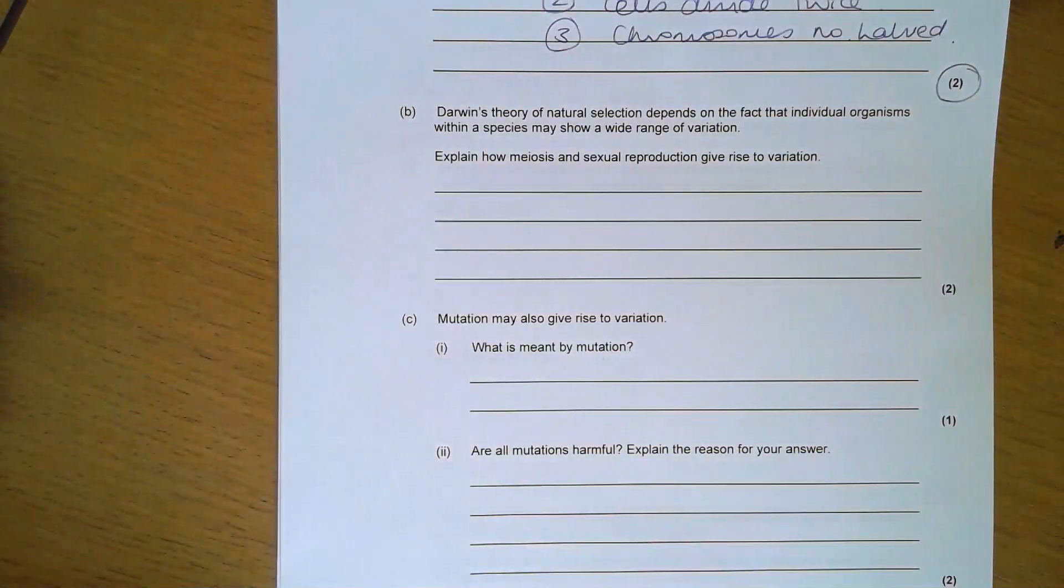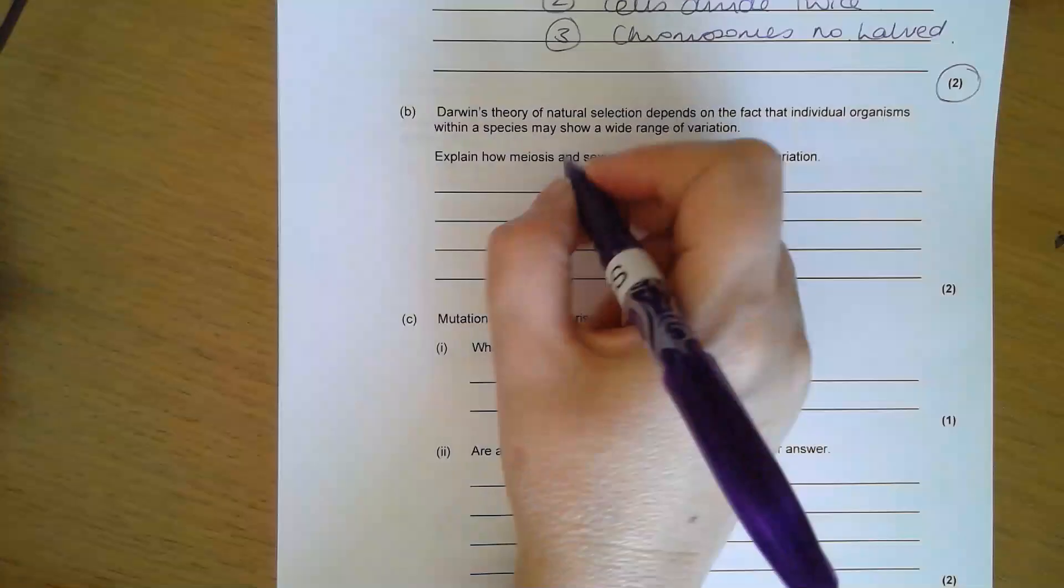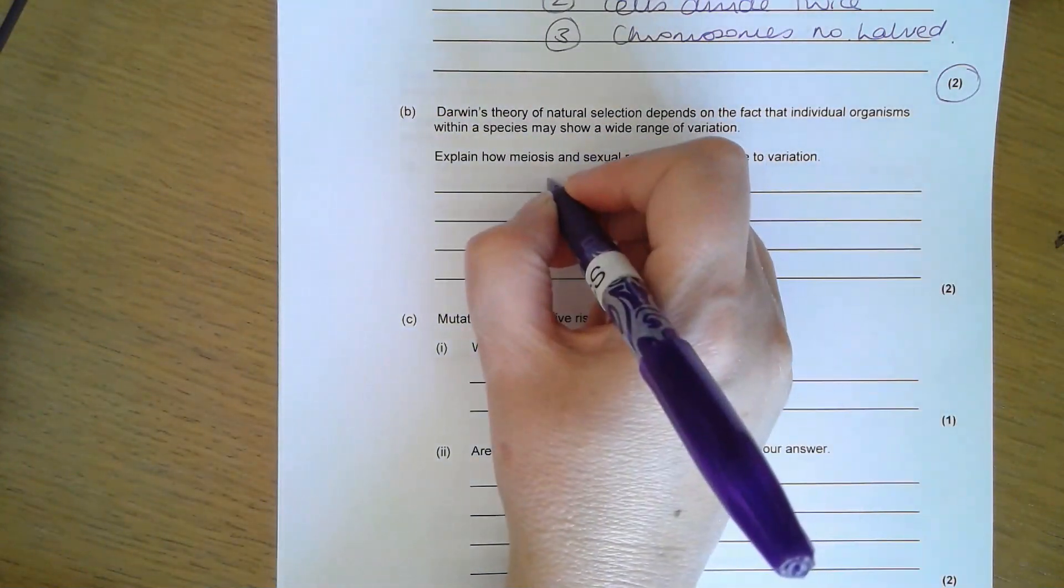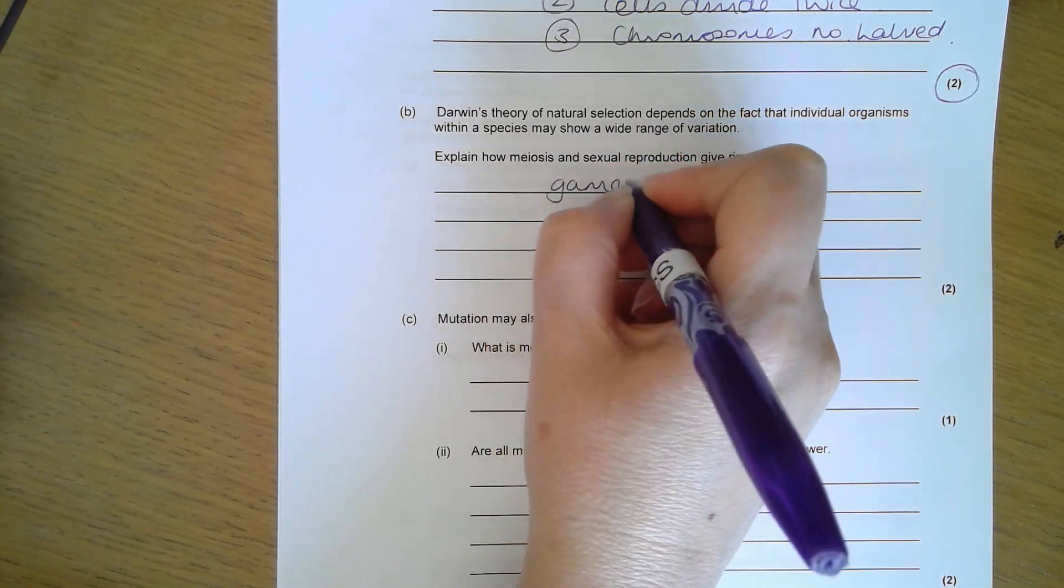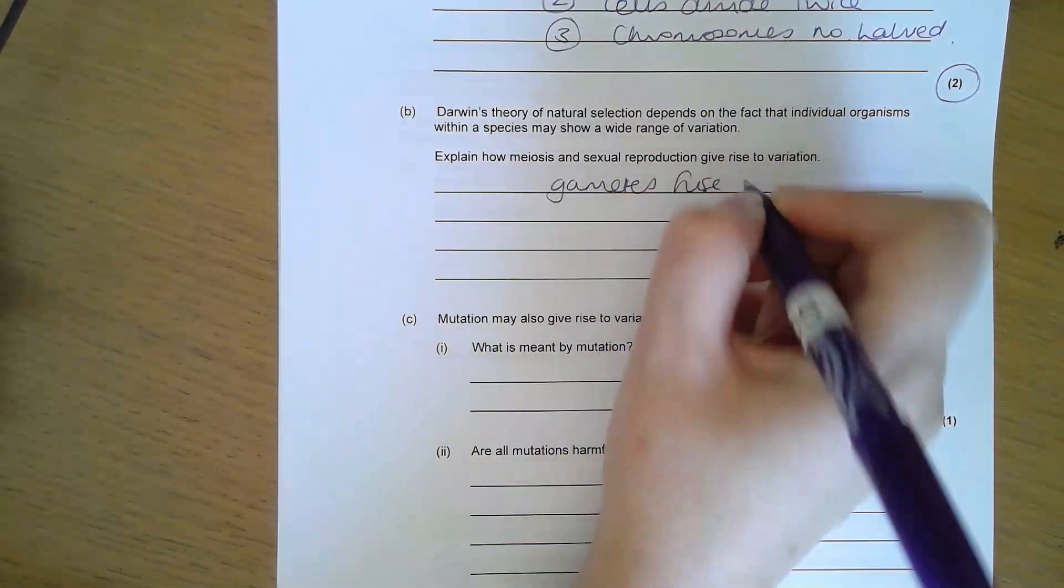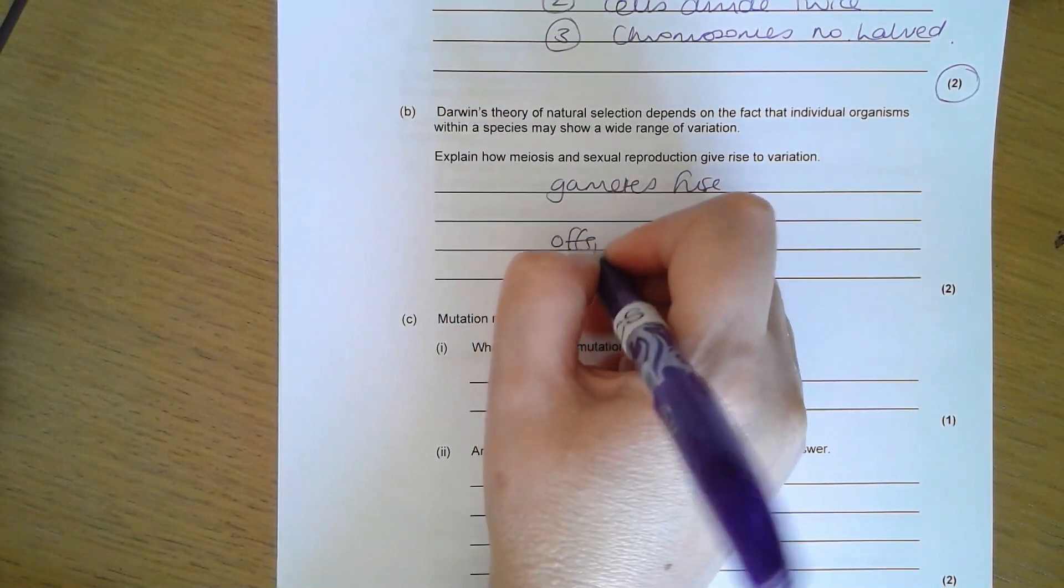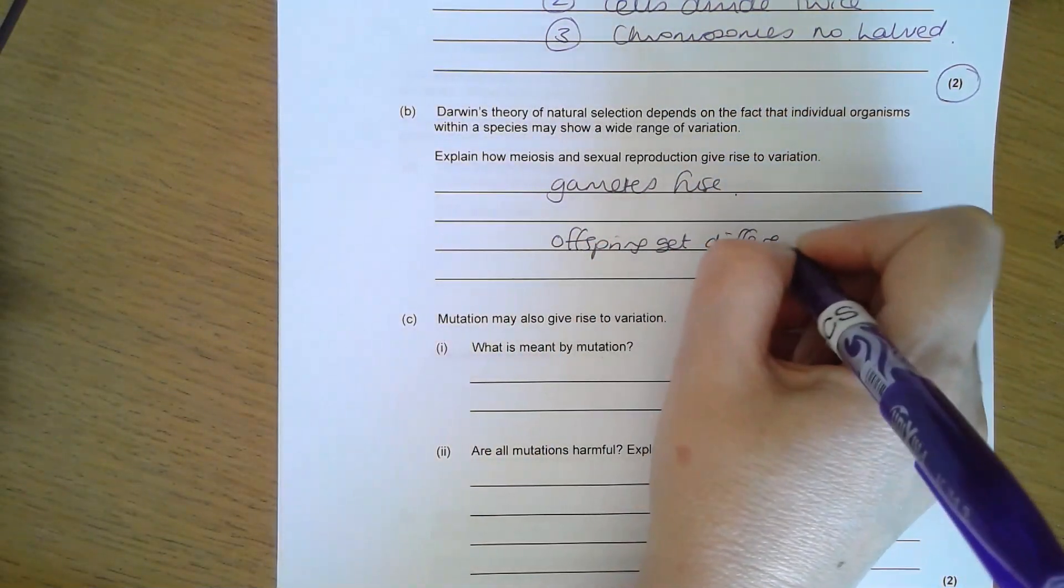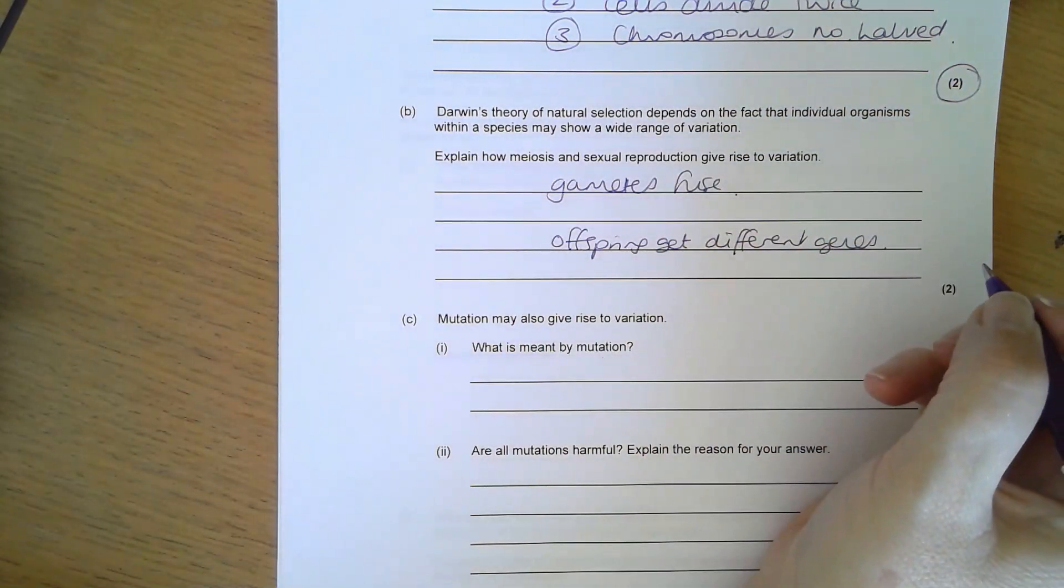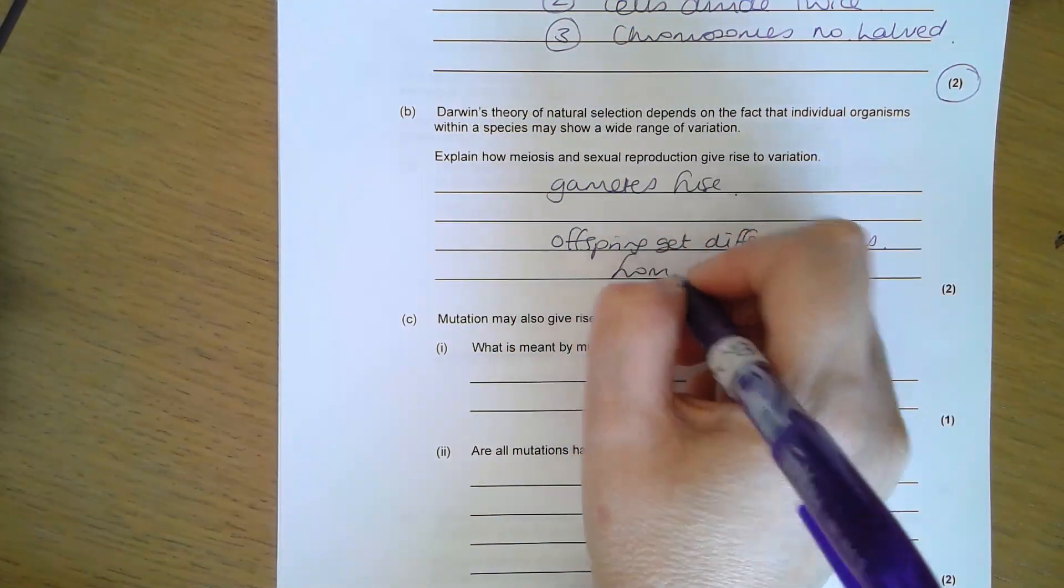Darwin's theory of natural selection depends on the fact that individual organisms within a species may show a wide range of variation. Explain how meiosis and sexual reproduction give rise to variation. In sexual reproduction, we have fertilization, so the gametes or sex cells fuse, and therefore the offspring get different genes or alleles or chromosomes from each parent.